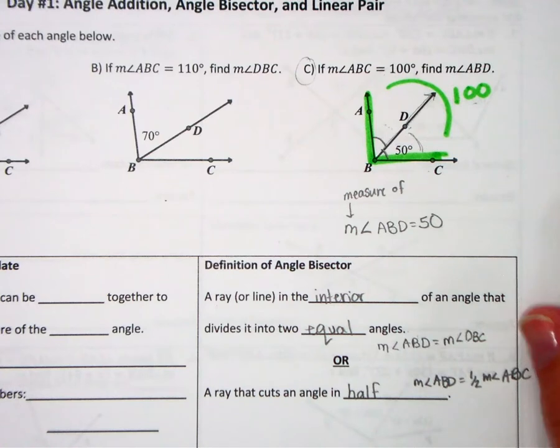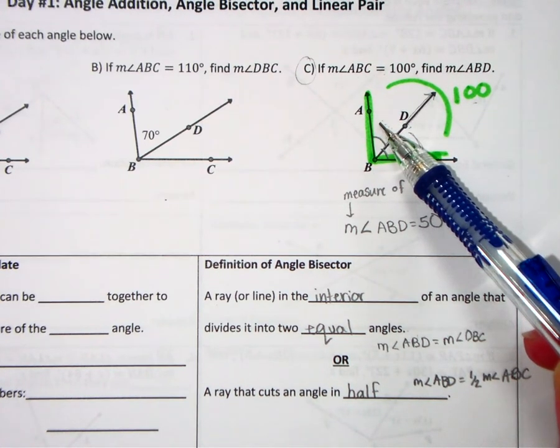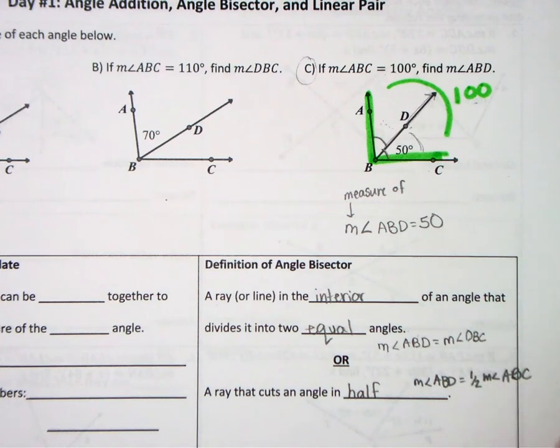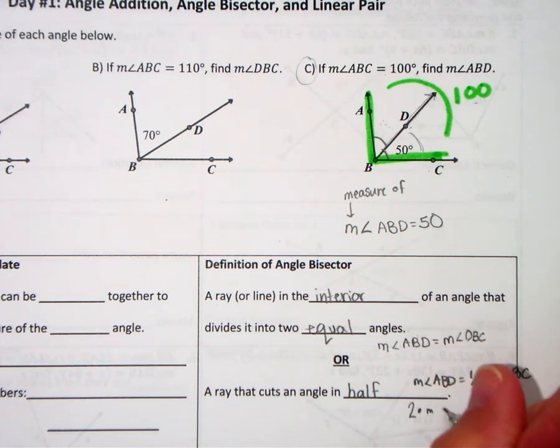So that was the 100, so this angle up here is half of 100. Now we didn't like using the one-half, some of us, so we put a two in the front instead. So you could also do two times the measure of ABD is equal to the whole thing, ABC.